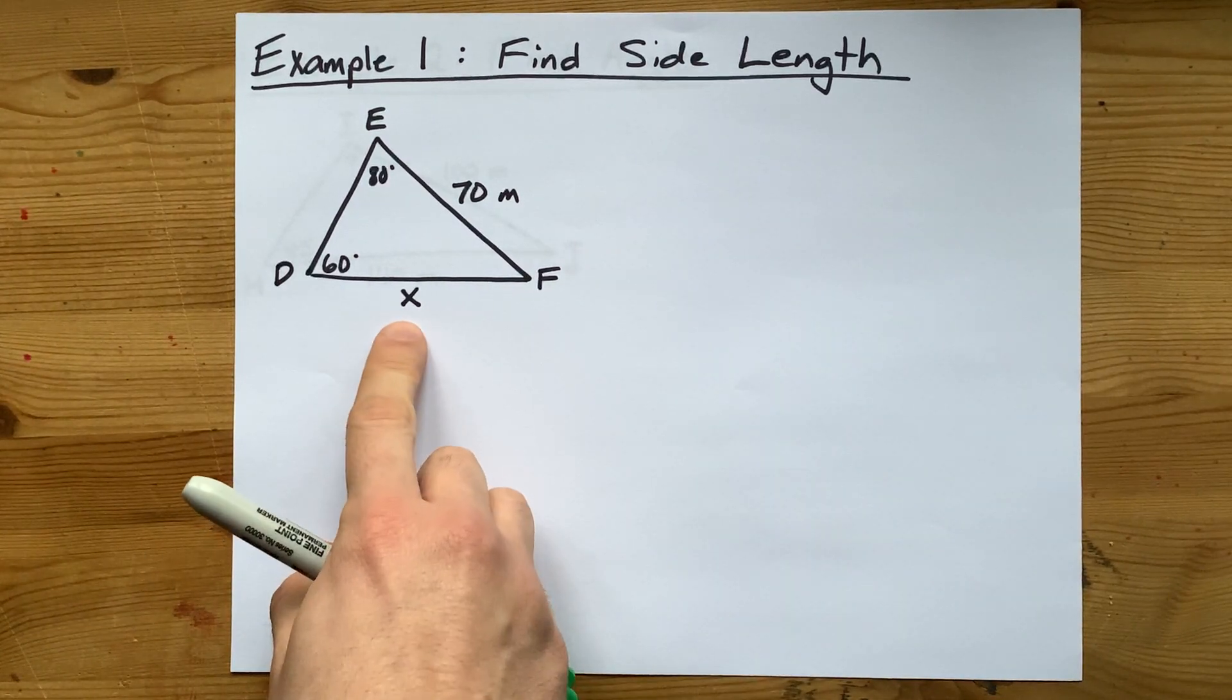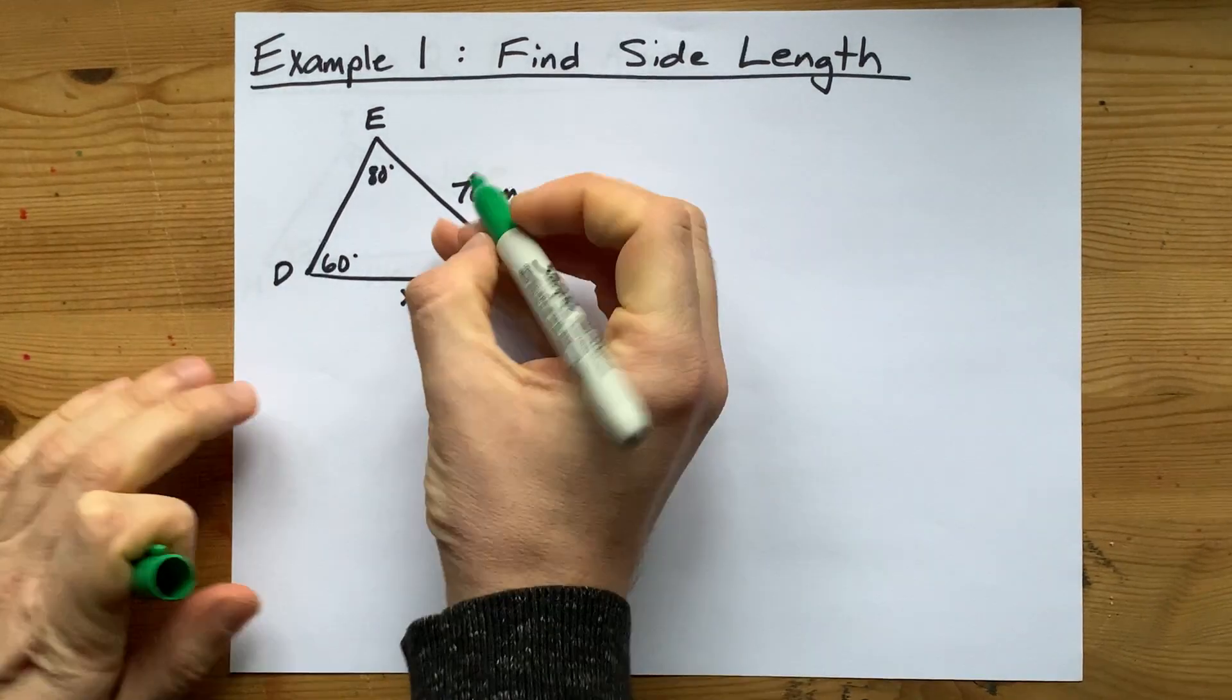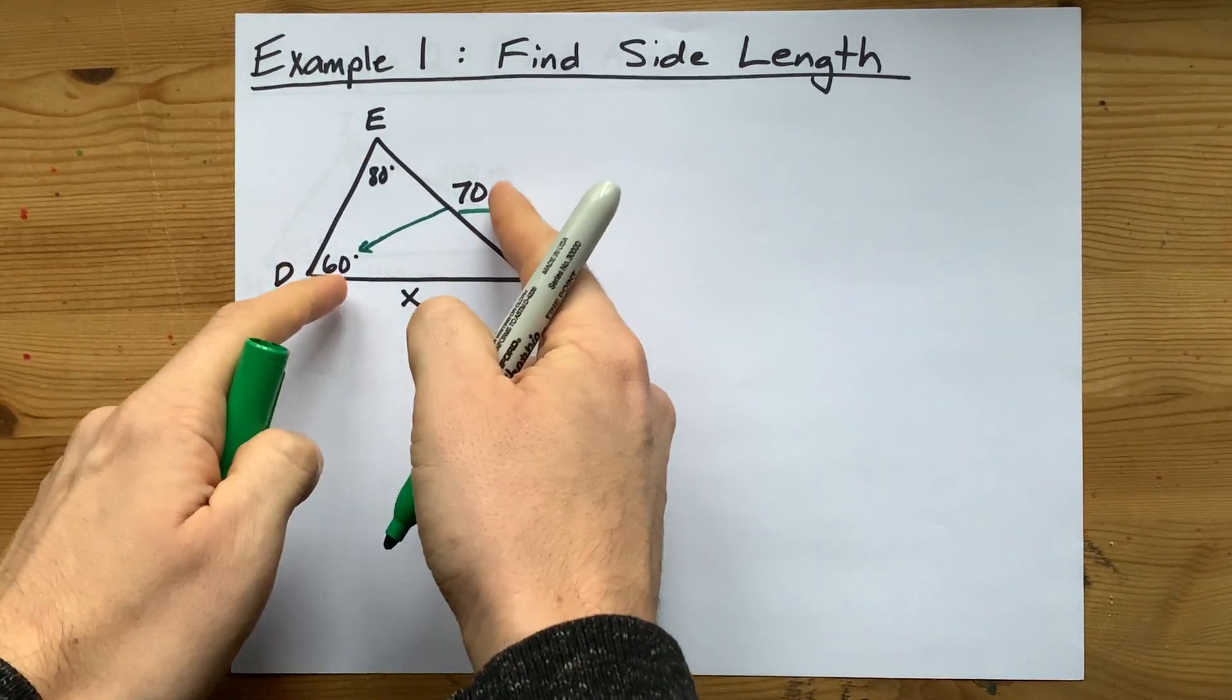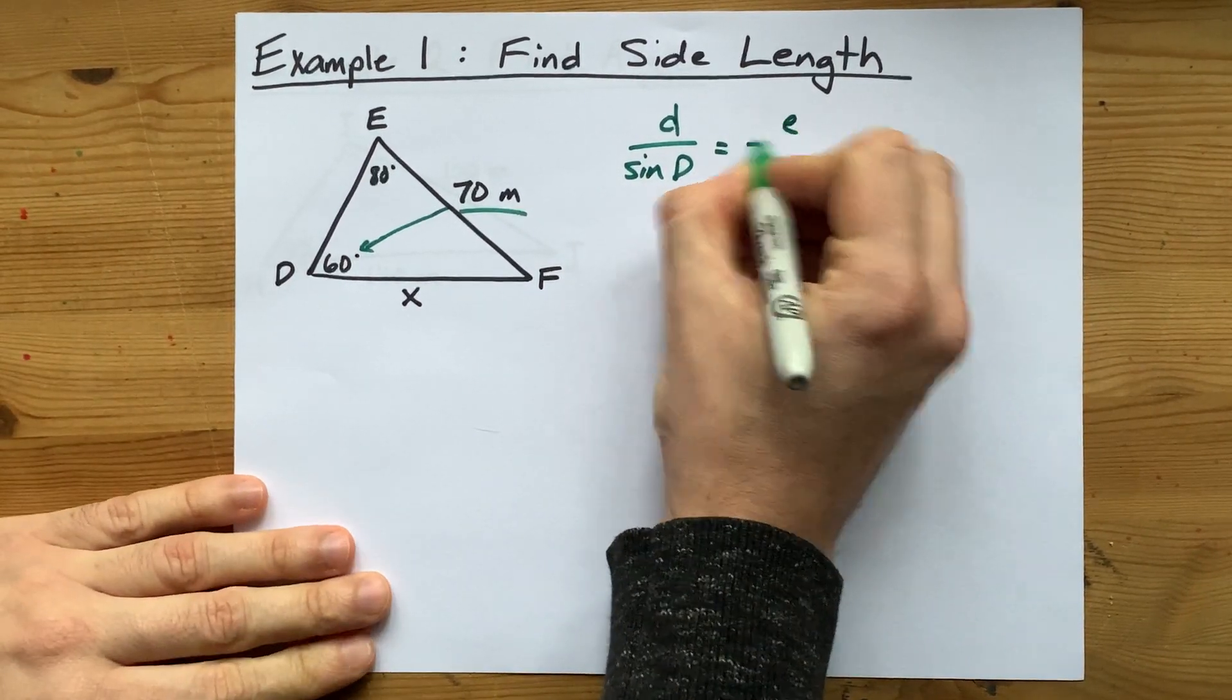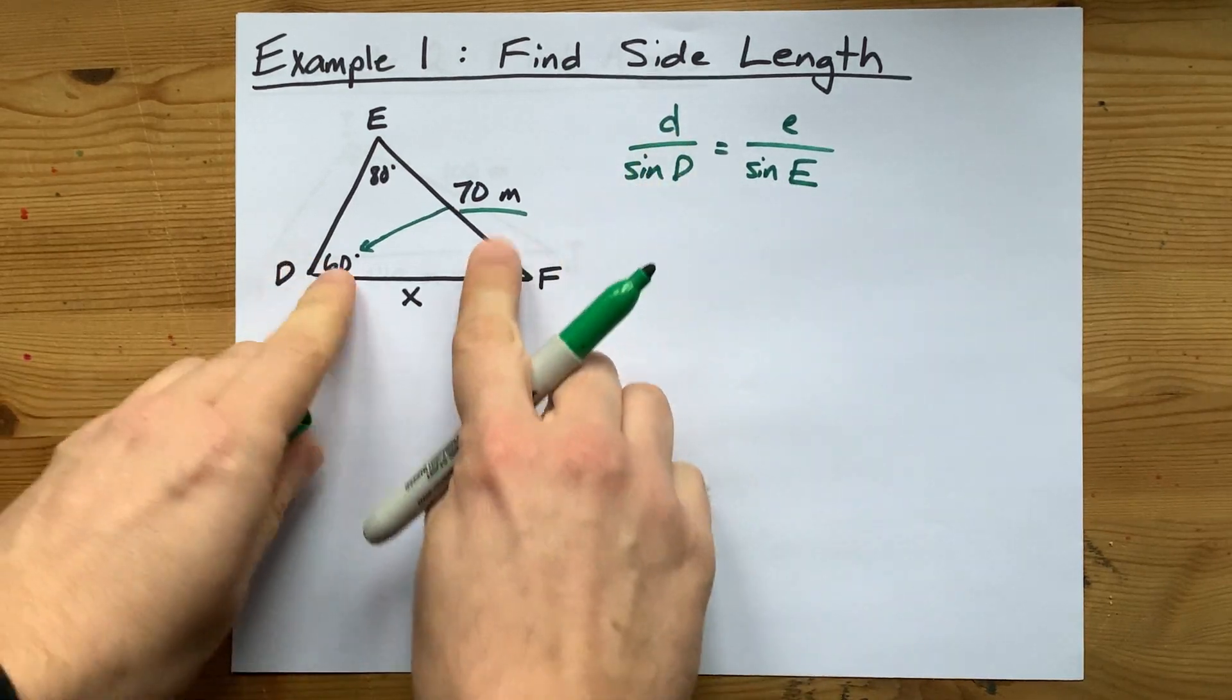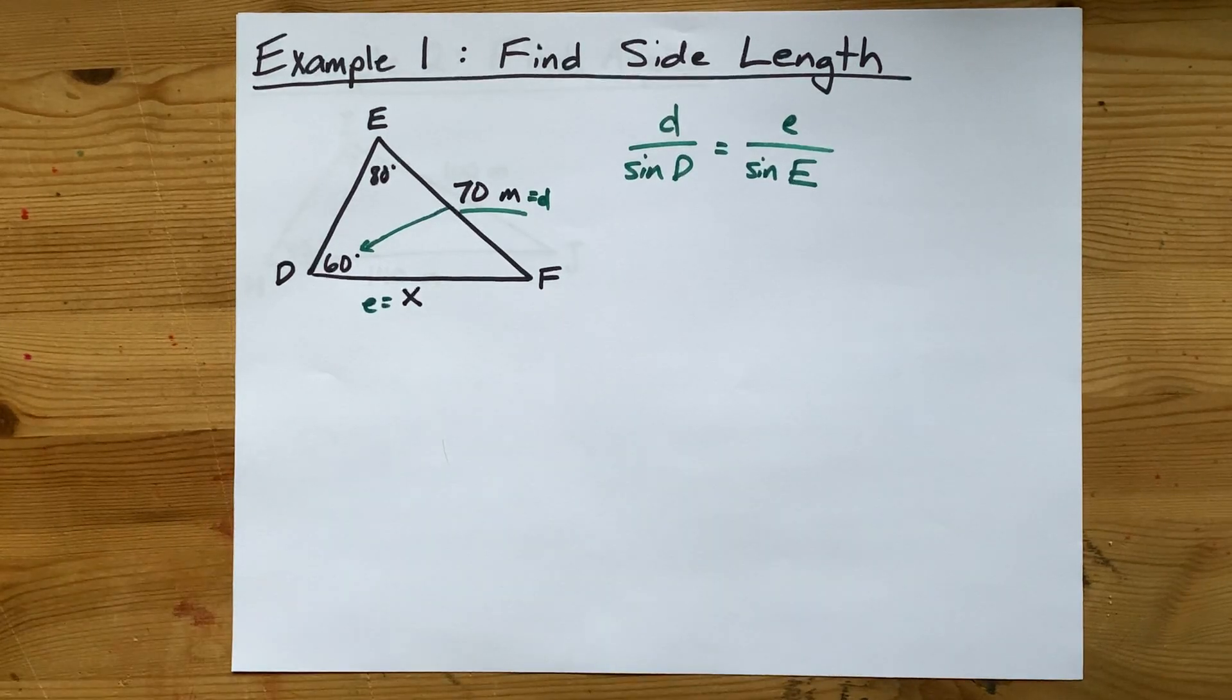Here's an example. Find the unknown length here x. Well x is across from 80 degrees, but we know we can use sine law because we have a pair of a side and the angle across from it. Here we are given a side that's little d and it's across from the angle 60 degrees. Because we know both of those and that's a pair across from each other, we can use sine law. Now little d over the sin of capital D equals little e over the sin of capital E. Now I'm using d in my first ratio because that's the side length and angle that I know, and I'm using e because I know the angle and I'm looking for the side length that corresponds to it.